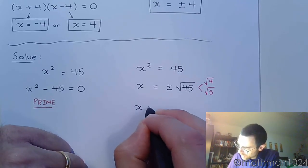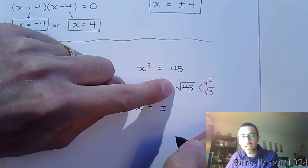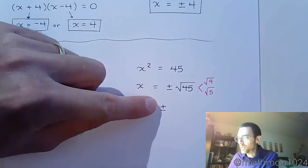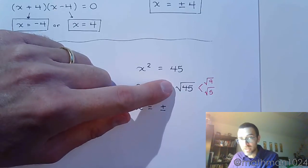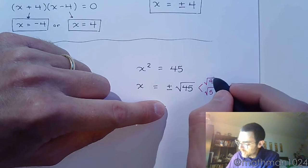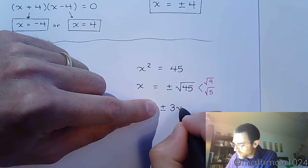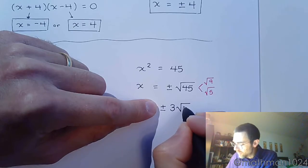So x is equal to plus or minus. You are really simplifying that square root and putting the plus or minus in front of it. So just kind of ignore that right now. So the square root of 45 is going to be the square root of 9, which gives me 3, and then the square root of 5, which has to stay as the square root of 5.